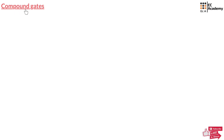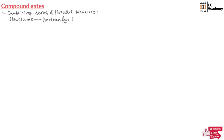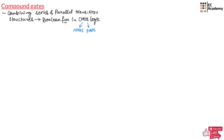In this lecture let us understand compound gates. The compound gates are formed by combining series and parallel transistor structures to implement any Boolean function in CMOS logic. Here a complex Boolean function will be implemented using CMOS logic. The implementation of Boolean functions in CMOS logic are known as compound gates.